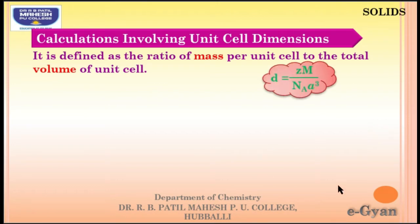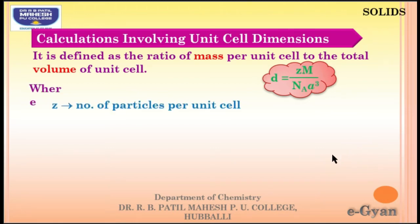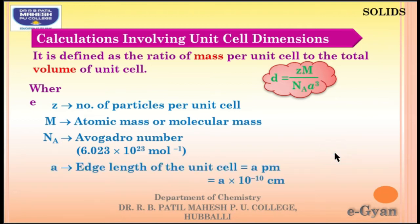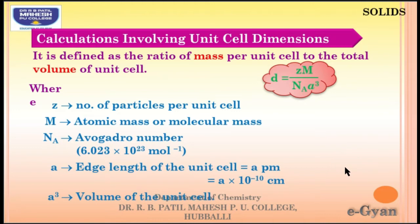The formula for density is: D = Z × M / (Nₐ × A³), where Z is the number of particles per unit cell, M is atomic or molecular mass, Nₐ is Avogadro's number (6.023 × 10²³), and A is the edge length of the unit cell in picometers. If given in picometers, convert A = A × 10⁻¹⁰ centimeters, and A³ is the volume of the unit cell.